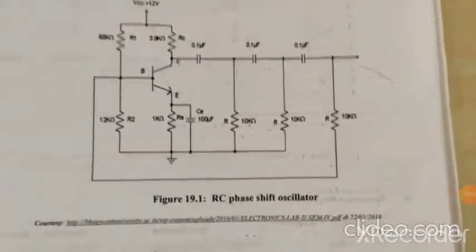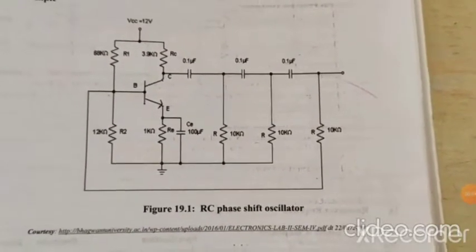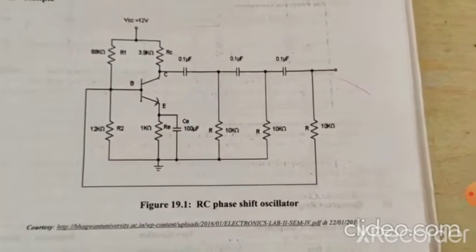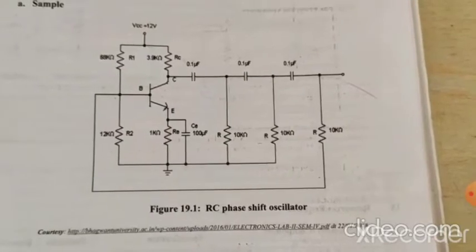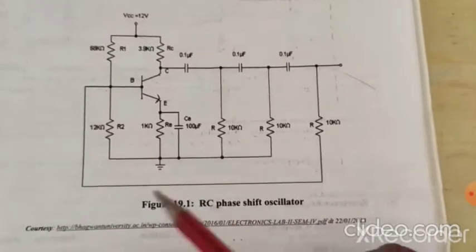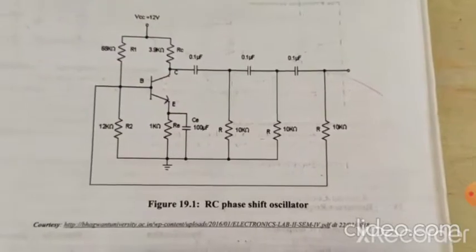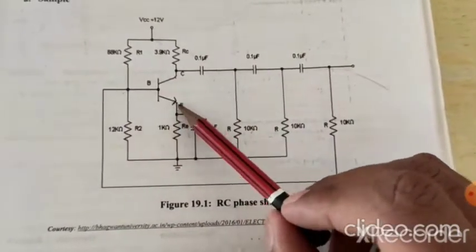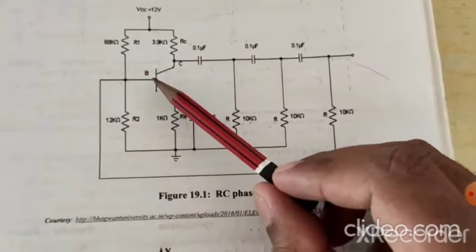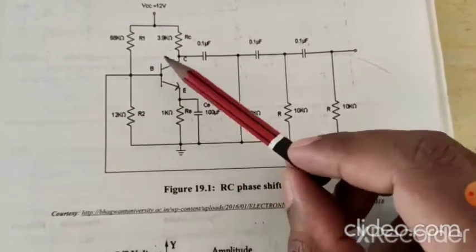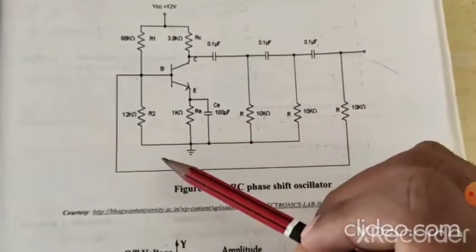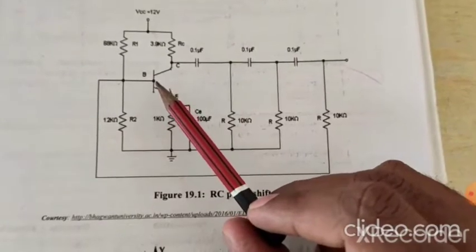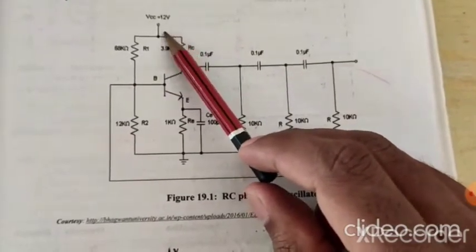Good morning students, today we are going to perform experiment number 16, that is the RC phase shift oscillator. This is the circuit diagram of the RC phase shift oscillator. It has a single-stage CE amplifier with one transistor, and R1 and R2 are biasing resistors. RC and RE are resistors, and VCC is 12 volts.